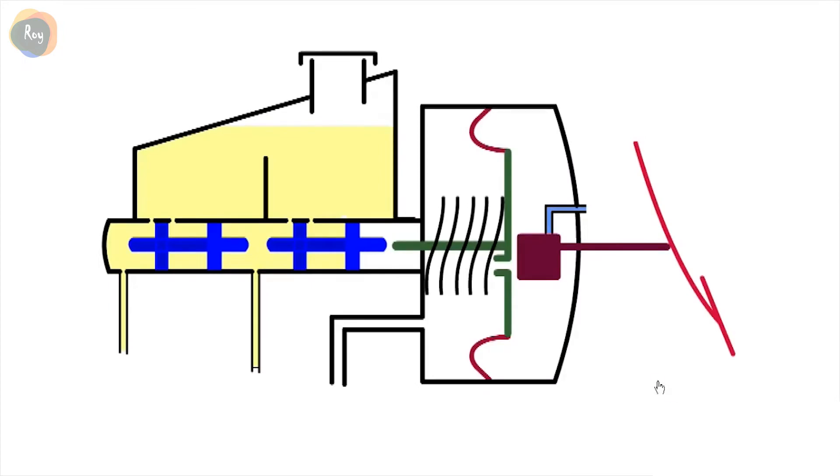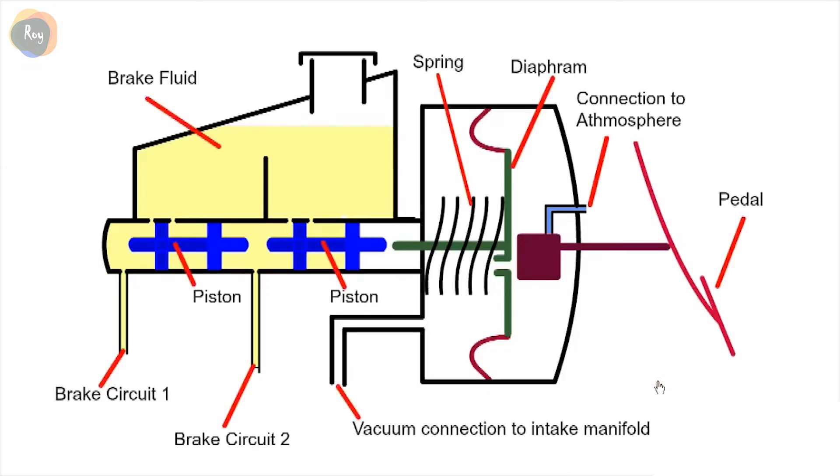As disc brakes do not have a wedging action similar to drum brakes, considerable effort is required to operate them. Usually a car will have a braking power assist system. This uses vacuum from the air intake system.